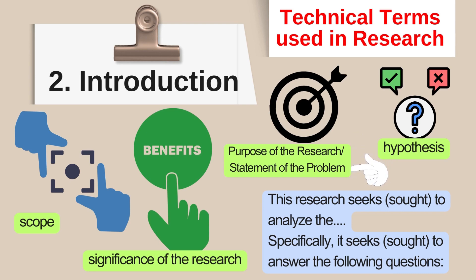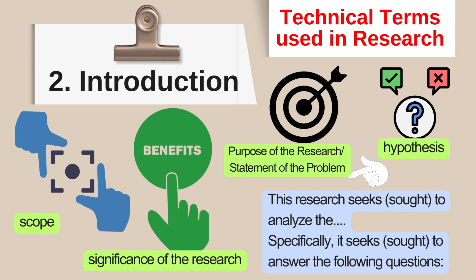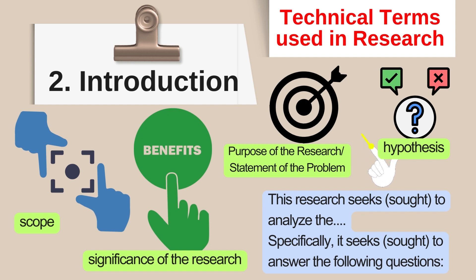Furthermore, purpose — from the term itself — simply states the aims and objectives of your research. In some schools, they use statement of the problem instead. Statement of the problem identifies the problems or questions that your research would like to answer. You can start it with: 'This research sought to analyze the...' and then specifically, 'sought to answer the following questions.' Then you will list the questions you will work on in your study.